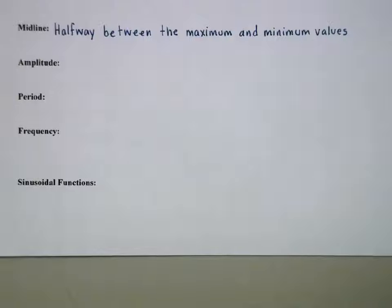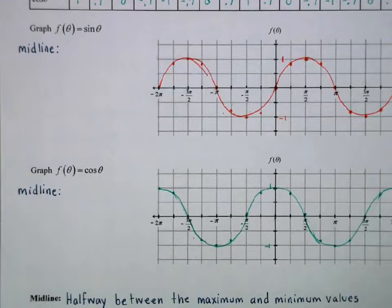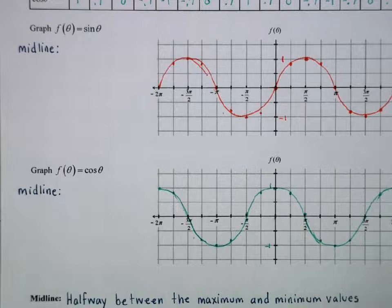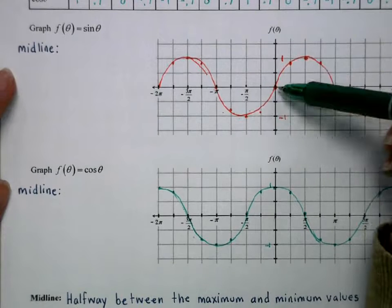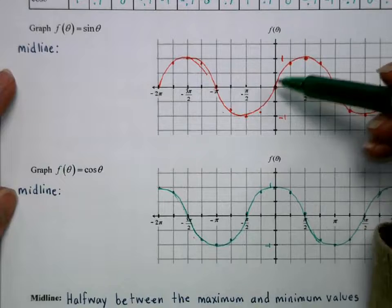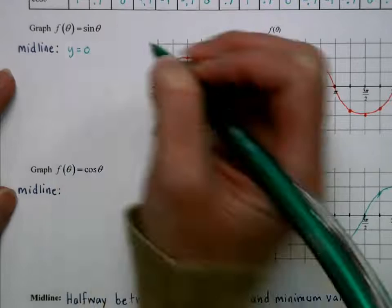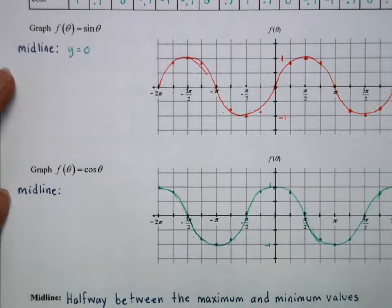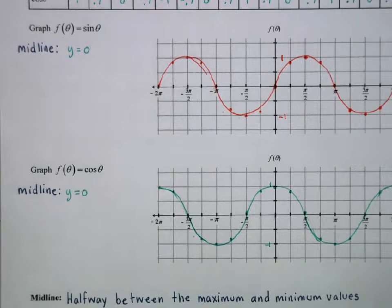Midline. The midline is going to be halfway between the maximum and minimum values. So going back to our parent graphs here for sine and cosine. The max is at 1, the minimum is at negative 1, so right in the middle of that is 0. So our midline for sine is y equals 0. For cosine, same thing. We always do a y equals because it is a horizontal line.